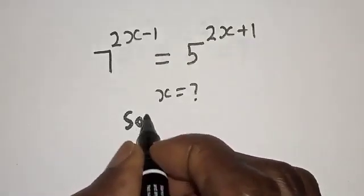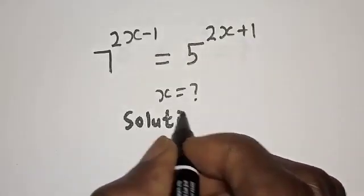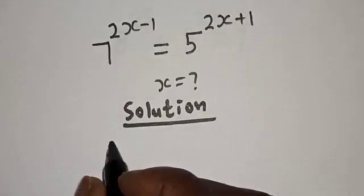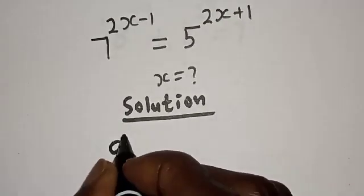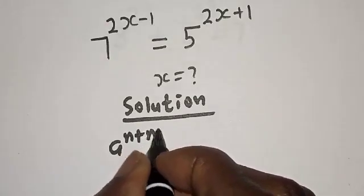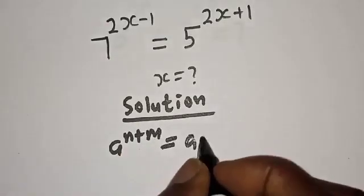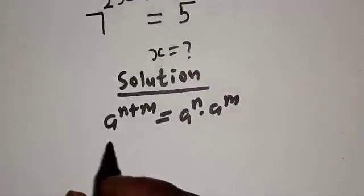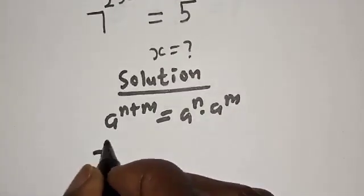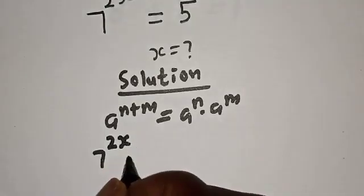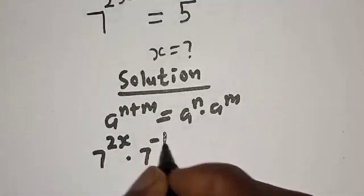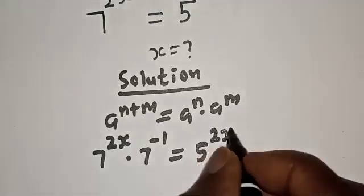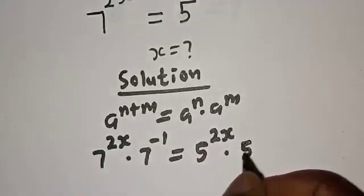Solution. Take note of this exponential rule: if you have a raised to power n plus m, this is equal to a raised to power n multiplied by a raised to power m. We have 7 raised to power 2s multiplied by 7 raised to power minus 1, equal to 5 raised to power 2s multiplied by 5 raised to power 1.